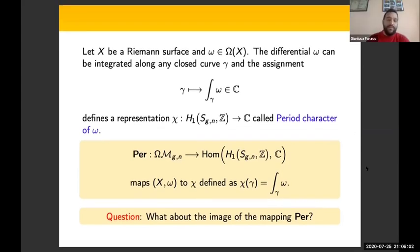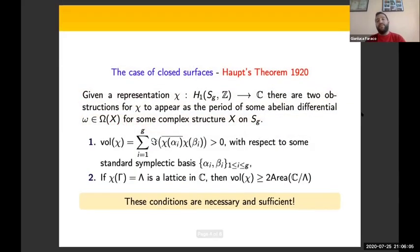For this case, we go back to one century ago, because Aut in 1920 provided necessary and sufficient conditions for a character χ to appear as the period of some abelian differential ω with respect to some complex structure X on a closed surface. Aut proved this theorem using geometric and elementary arguments, but the same theorem was recently rediscovered by Misha Kapovich around 2000, whose proof relies on Ratner's theory, connecting geometry and ergodic theory.